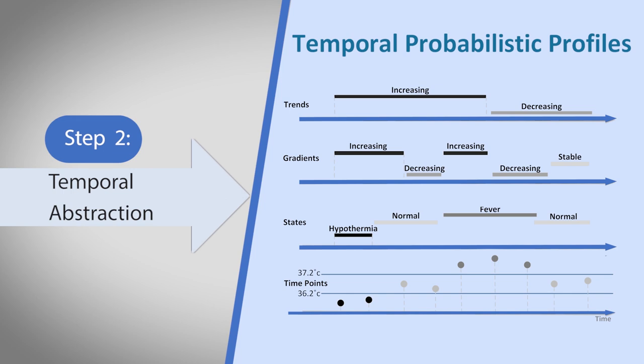Temporal abstraction can be done by either using the knowledge acquired from a domain expert, or using automatic techniques.